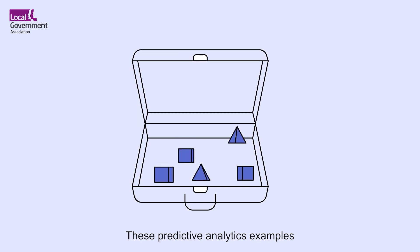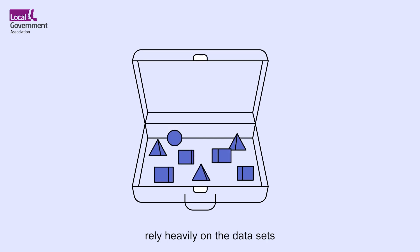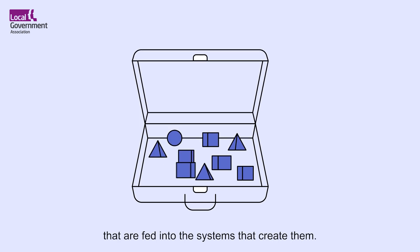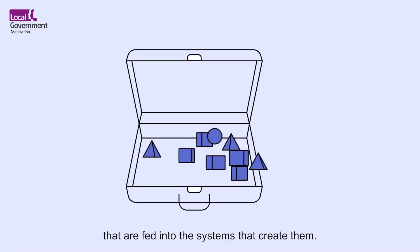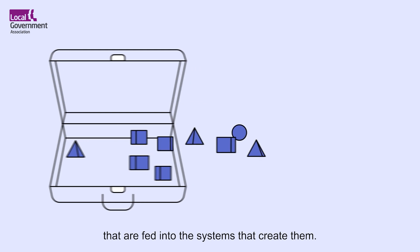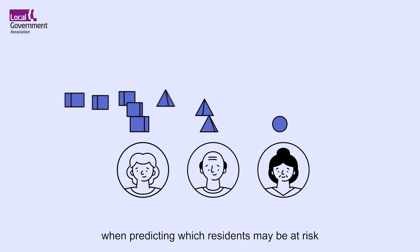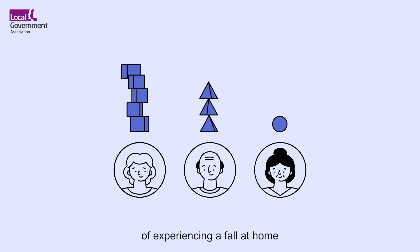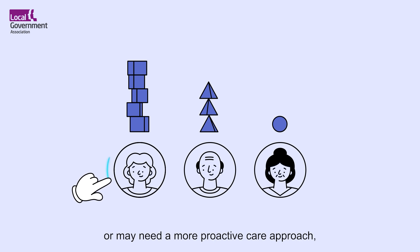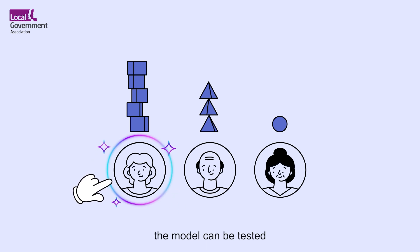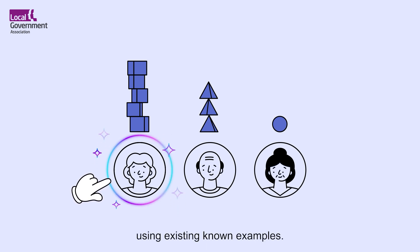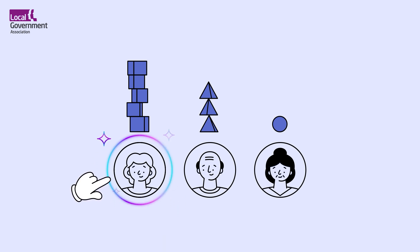These predictive analytics examples rely heavily on the data sets that are fed into the systems that create them. For example, when predicting which residents may be at risk of experiencing a fall at home, or may need a more proactive care approach, the model can be tested using existing known examples.